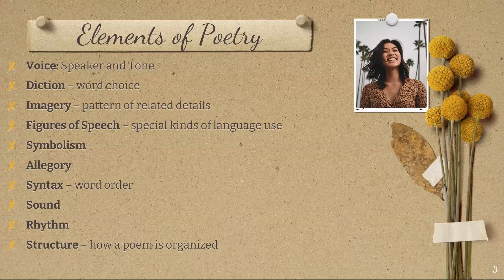Rhythm in poetry involves sound patterning. A lot of classical poetry conforms to a systematic regularity of rhythm, which is referred to as a poem's meter. This involves a combining of stressed and unstressed syllables to create a constant beat pattern that runs throughout the poem.